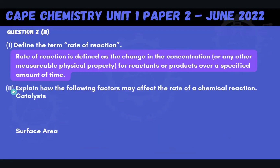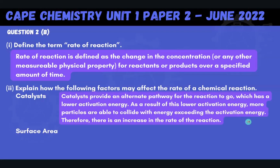Part 2 asks us to explain how the following factors may affect the rate of a chemical reaction. The first factor is catalysts. Catalysts provide an alternate pathway for the reaction, which has a lower activation energy. As a result of this lower activation energy, more particles are able to collide with energy exceeding the activation energy, and therefore there is an increase in the rate of the reaction.